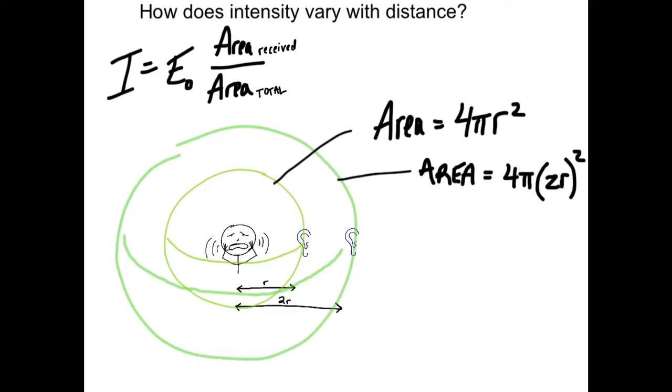If you get twice as far away, the surface area of a sphere is 4 pi r squared. So if we square 2r, you're really four times as big of a bubble there. So you're receiving one-fourth of the intensity, just by going twice as far away. And that's how you get the 1 over r squared relationship.